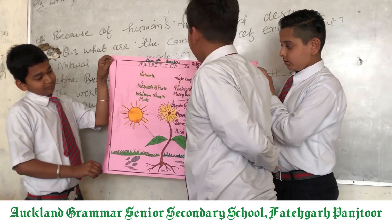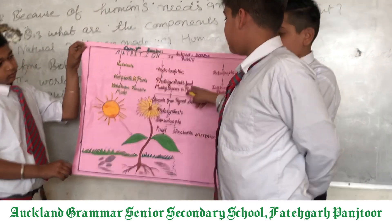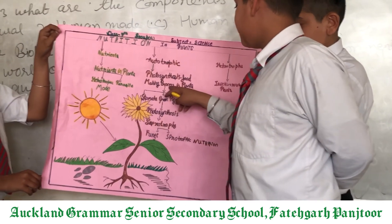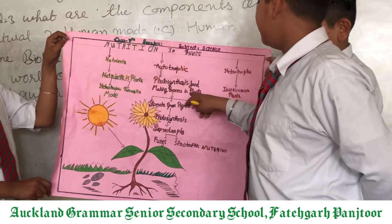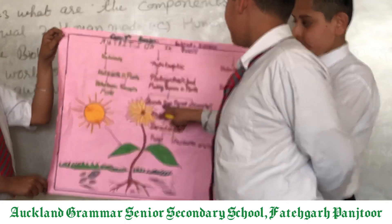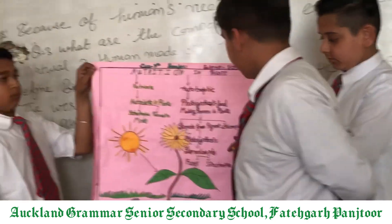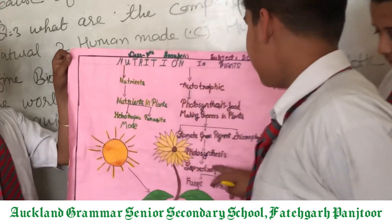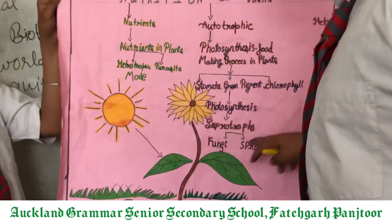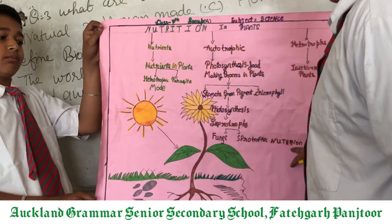Autotrophic — for the food-making process in the plant. The green pigment is chlorophyll. Photosynthesis. Saprotrophs, for example fungi. Saprotrophic nutrition.